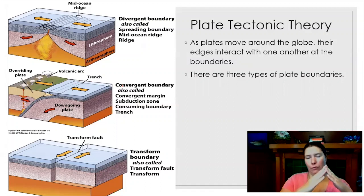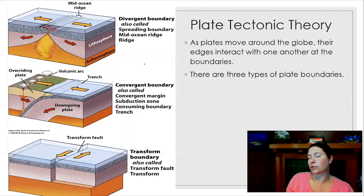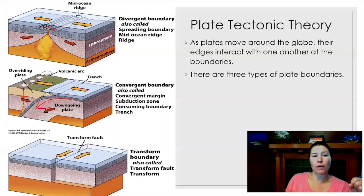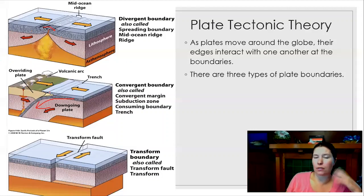Divergent mid-ocean ridges tend to be some of the shallower places in the ocean—the Mid-Atlantic Ridge comes up about halfway to the surface from the surrounding seafloor. Convergent subduction zones, where an oceanic plate dives below another plate, create the deepest parts of the sea: the trenches. The Marianas Trench is the deepest part of the ocean because the crust diving down is about 180 million years old—cold, dense, and heavy—being pulled deep down into the earth. All subduction zones create trenches.